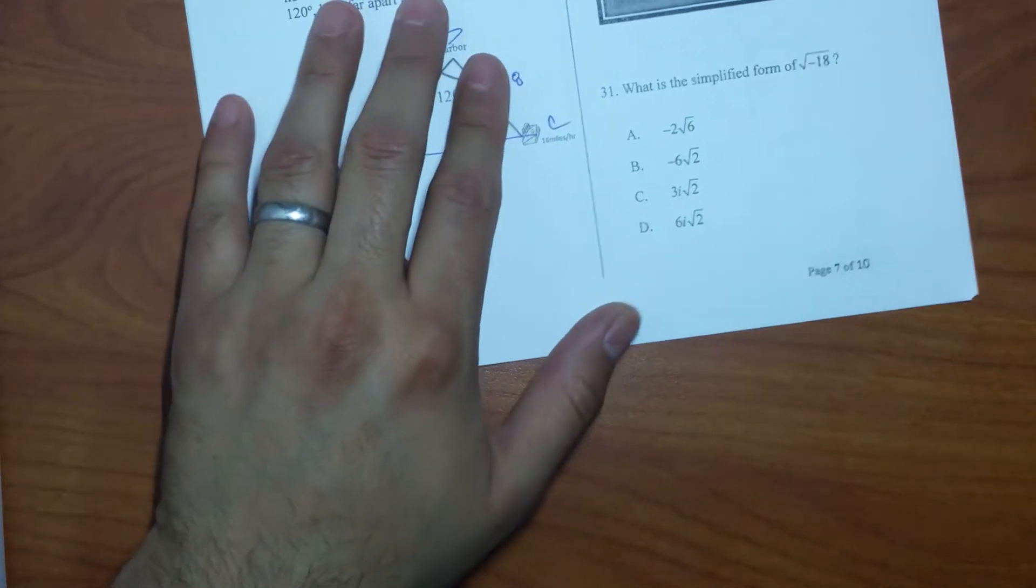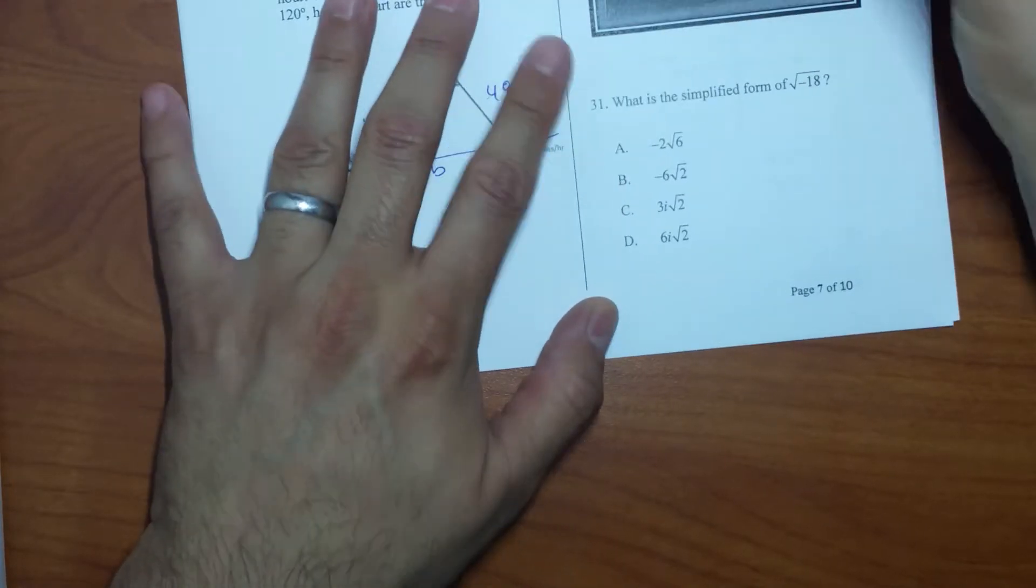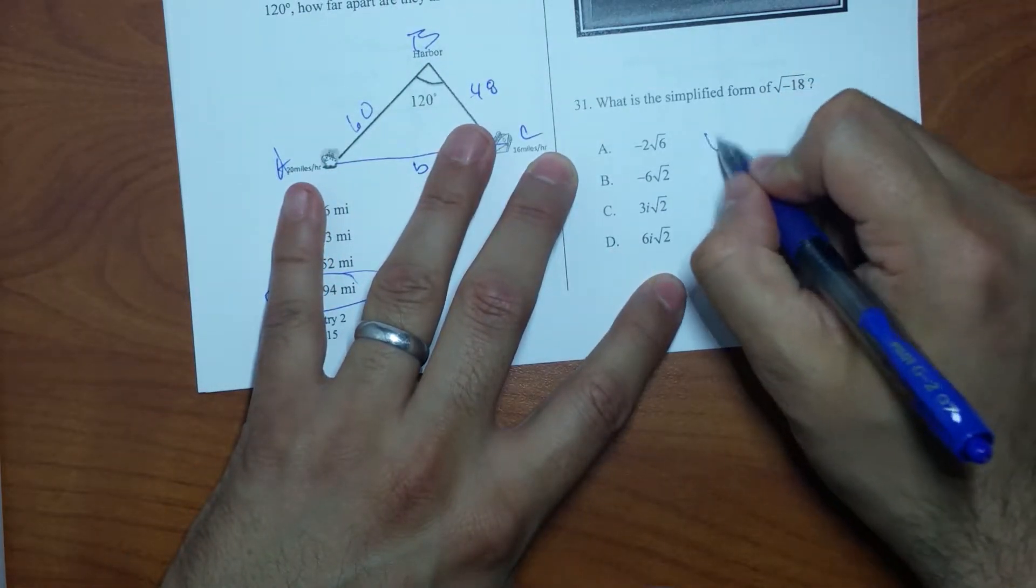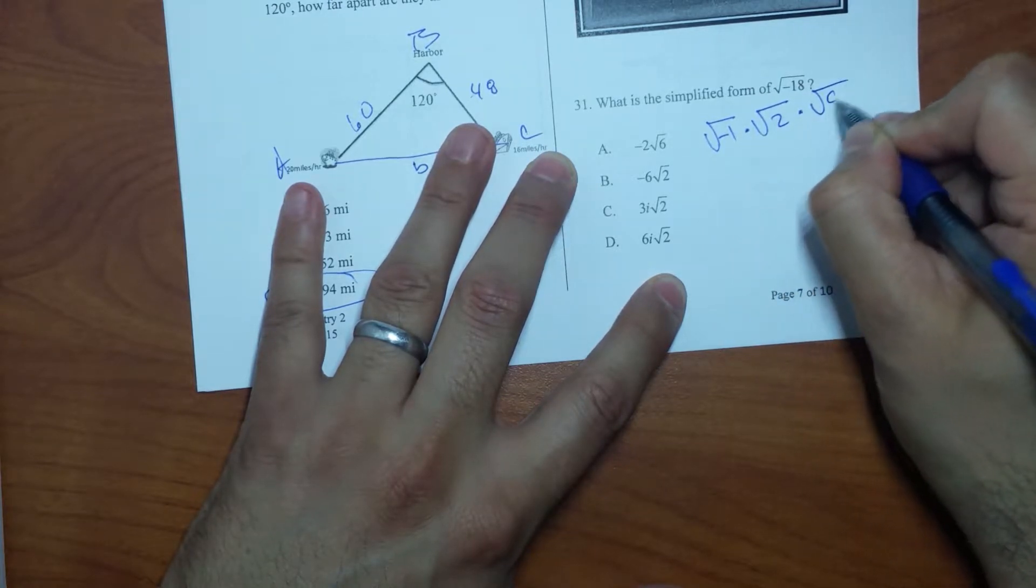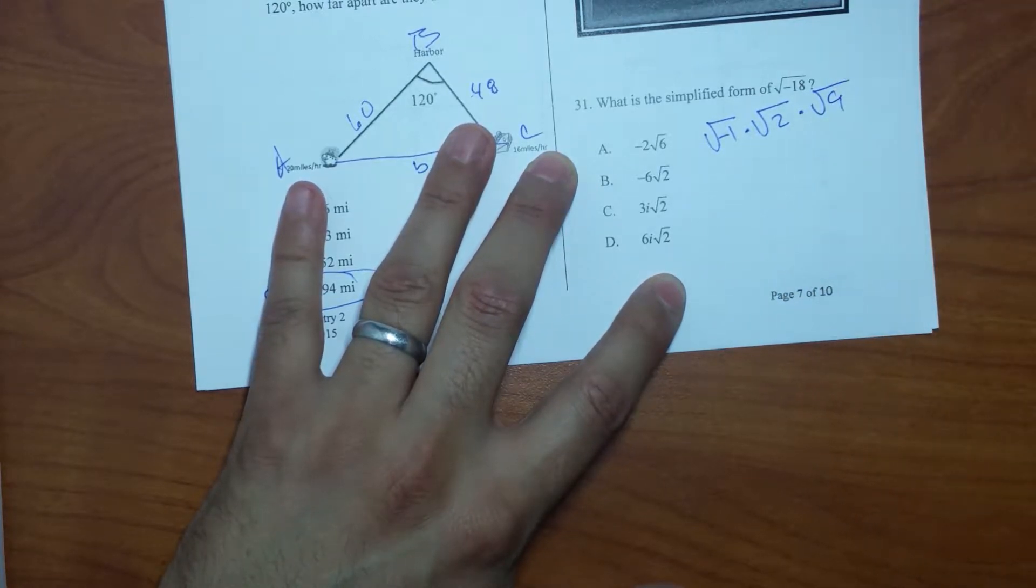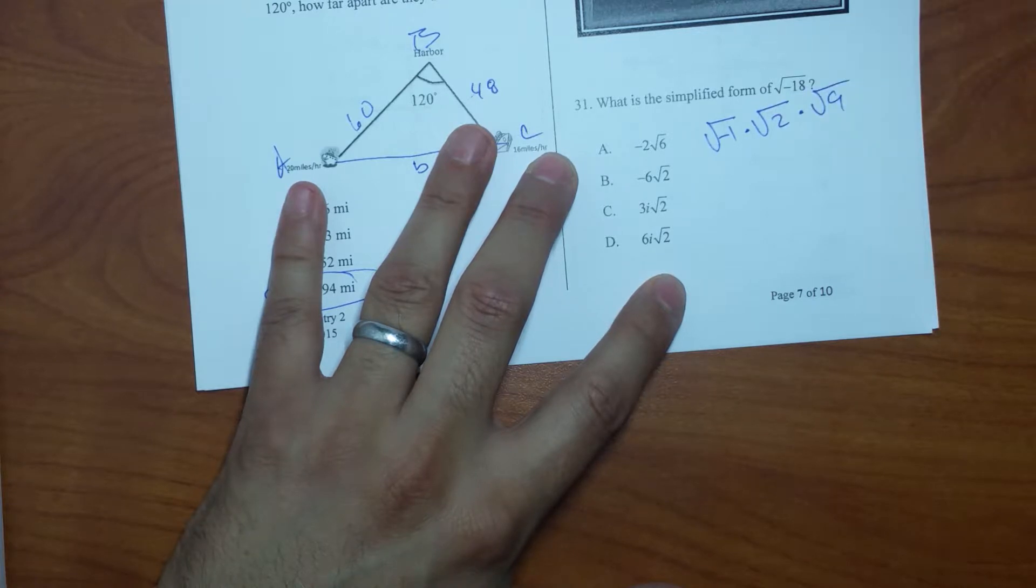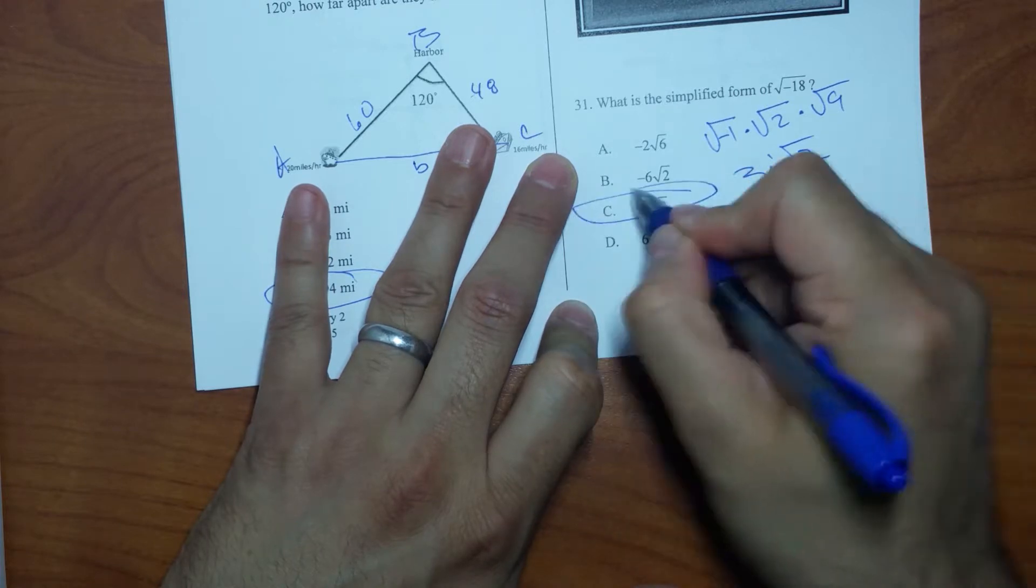Now for this one right here, for number 31, I'm going to factor out this, so it's going to be the square root of negative 1 times the square root of 2 times square root of 9. Why am I using square root of 9 there? Perfect square. So square root of 9 is 3, square root of negative 1 is i, and I just have the rad 2 left over, right? 3i rad 2, so my answer is C.